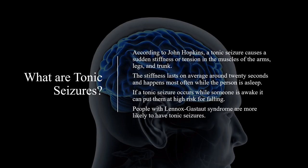According to Johns Hopkins, a tonic seizure causes a sudden stiffness or tension in the muscles of the arms, legs, and trunk. The stiffness lasts on average around 20 seconds and happens most often while the person is asleep. If a tonic seizure occurs while someone is awake, it can put them at high risk for falling. People with Lennox-Gastaut syndrome are more likely to have tonic seizures.